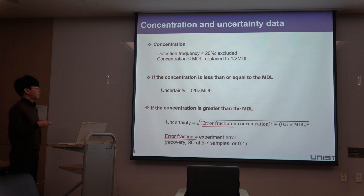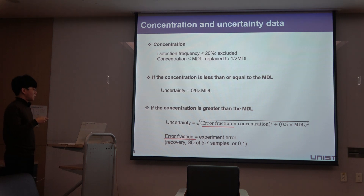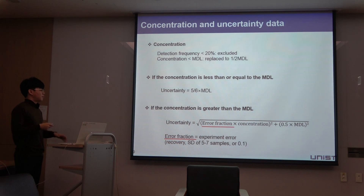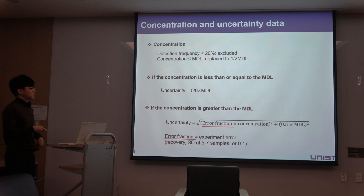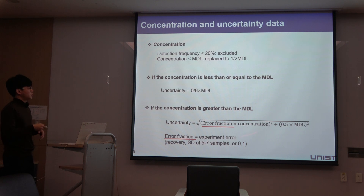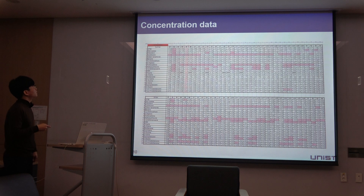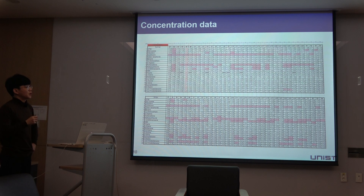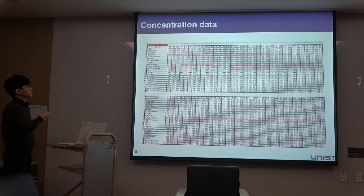In these equations, error fraction means experimental error. You can use the recovery standard deviation of 5 to 7 samples, or as in other previous studies, a value of 0.1. You don't need to directly derive these equations, as many previous studies have adapted them, but EPA recommends these specific equations, so I use them to calculate uncertainty. For example, in the input data, the red box indicates that the concentration is lower than MDL, so the value is replaced with half of MDL. Then, uncertainty is calculated based on this concentration input data.